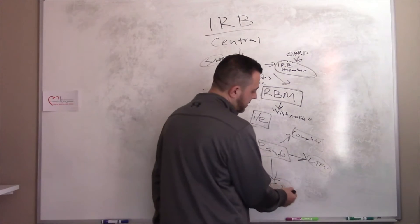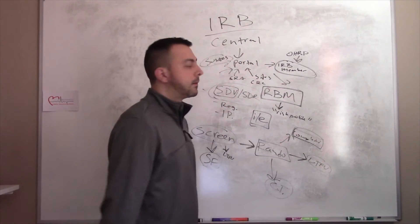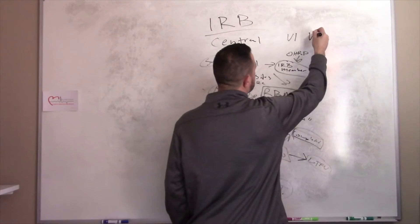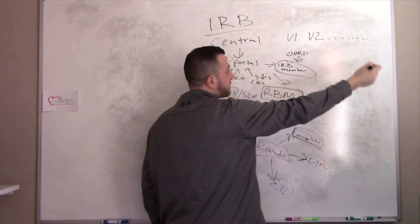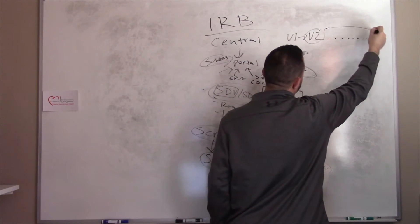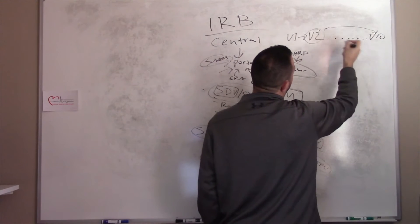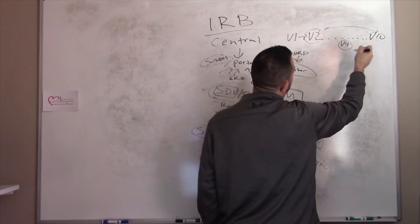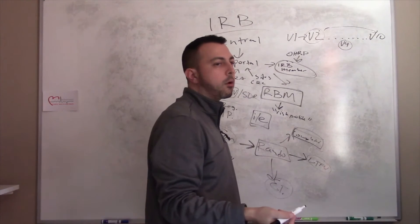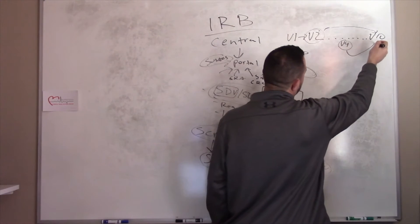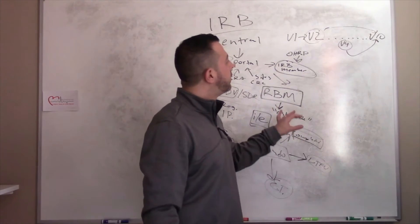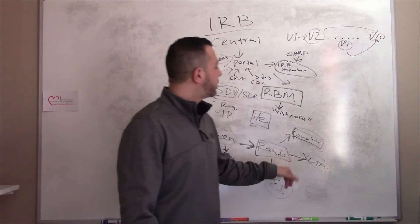The early termination visit and the completion visit are essentially the same visit, just called different things based on the situation. For example, screening is visit one, randomization is visit two, and the completion visit might be visit ten. If a patient completes all visits, it's a completion visit. If they or the PI or sponsor decide they should stop early, they encourage an early termination visit — same assessments, different name.